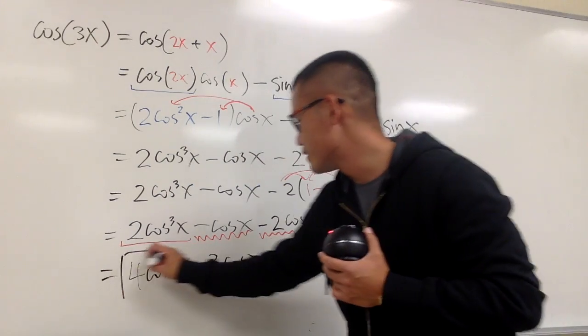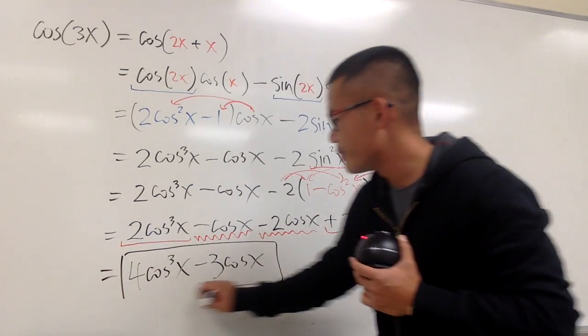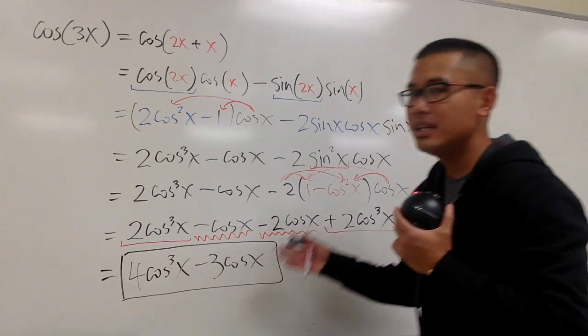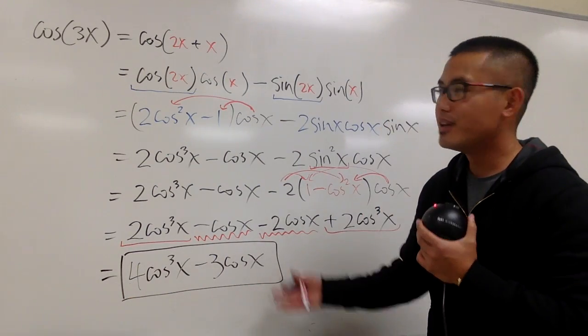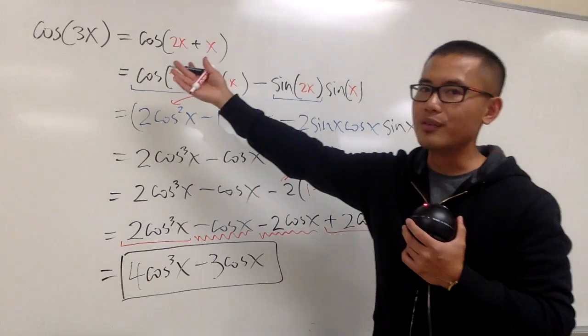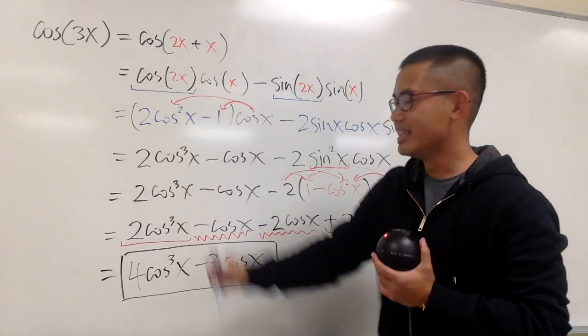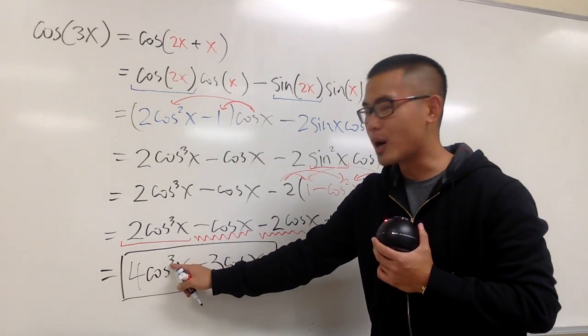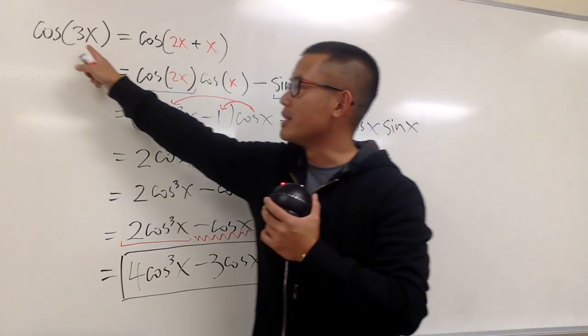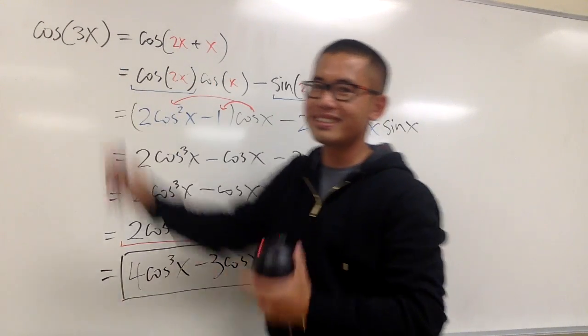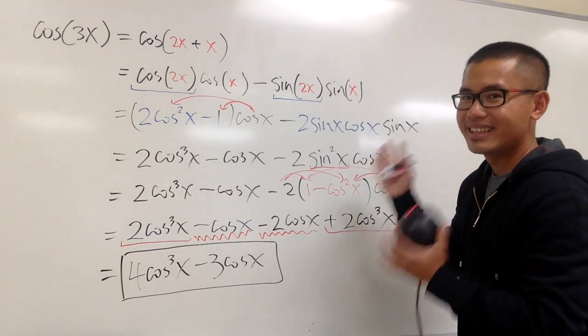So this right here will be an identity for cosine of 3x: 4cos³x minus 3cos(x). The 4cos³x has the third power, and the 3cos(x) is just 3 times x. And that's it.